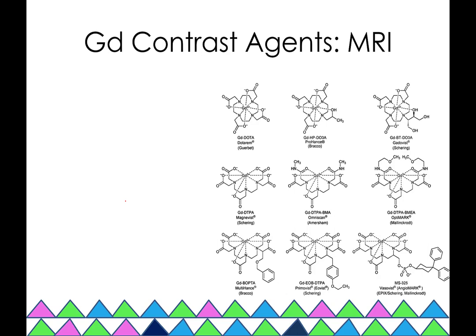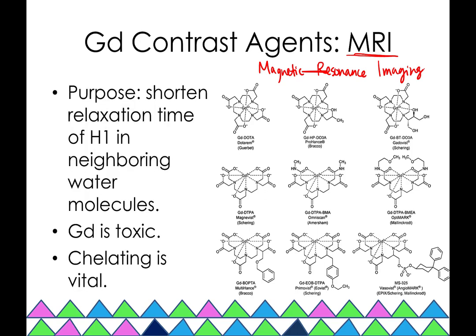The last example is gadolinium contrast agents, specifically for MRI — magnetic resonance imaging. With MRI we use magnets to look at the spin of protons in water molecules. The purpose of gadolinium is that it shortens the relaxation time of protons and neighboring water molecules.